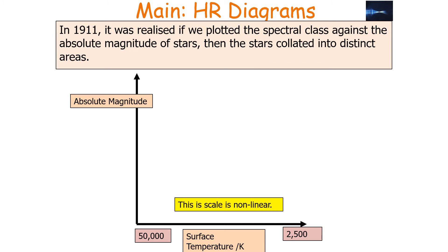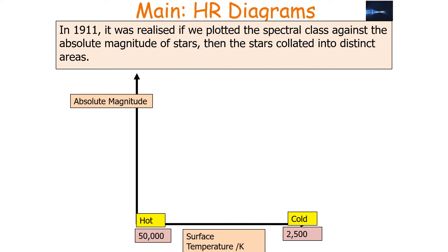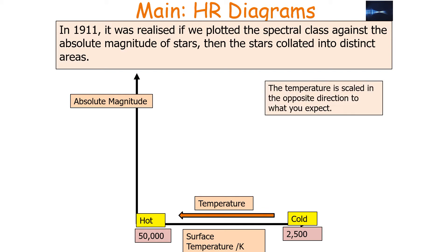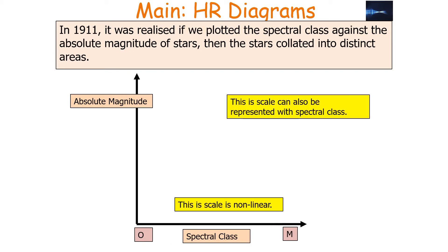This scale is non-linear. We have very hot on the left-hand side of our Hertzsprung-Russell diagram and very cold on the right-hand side, so the temperature increases the further left you go. The temperature is scaled in the opposite direction to what you would expect from most other graphs in science. This scale can also be represented with a spectral class, with O on the left-hand side and M on the right-hand side.